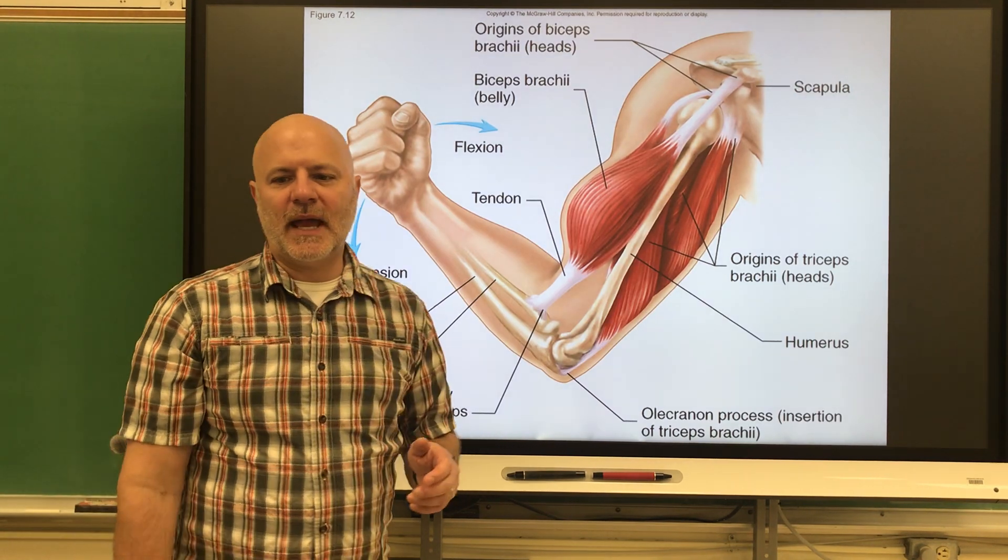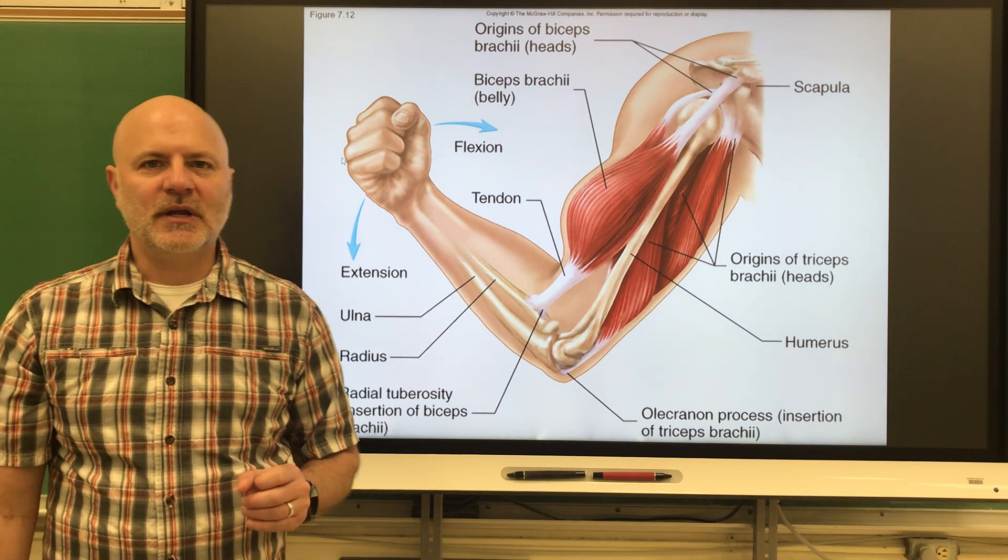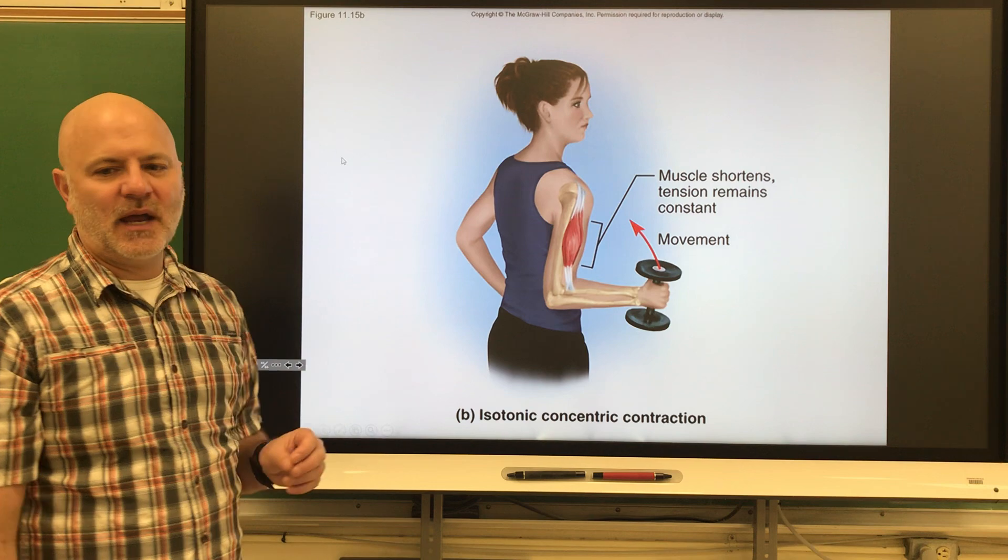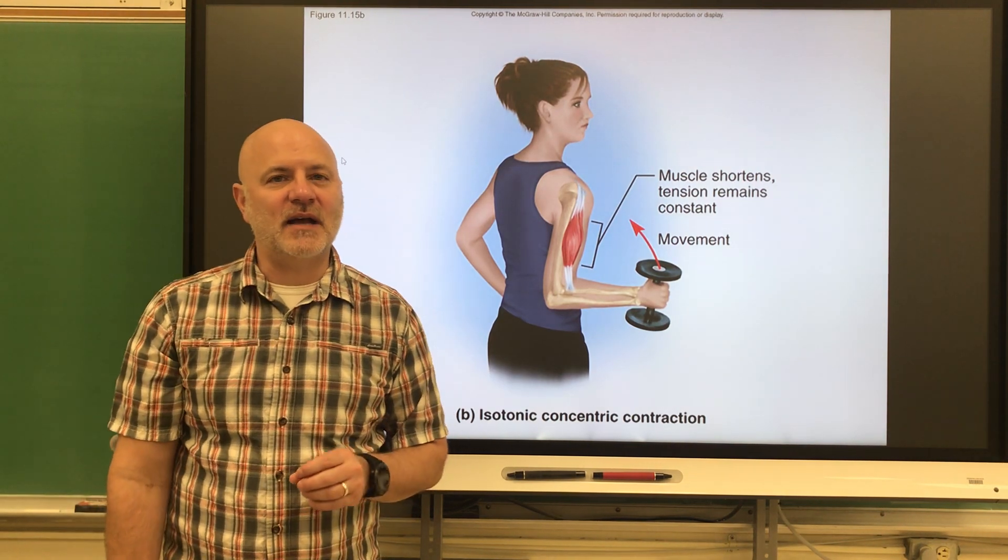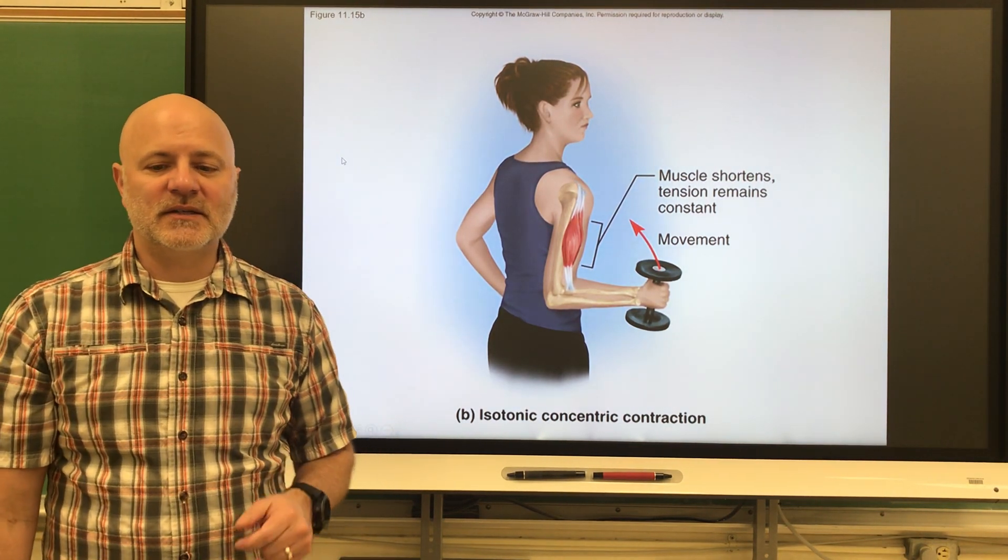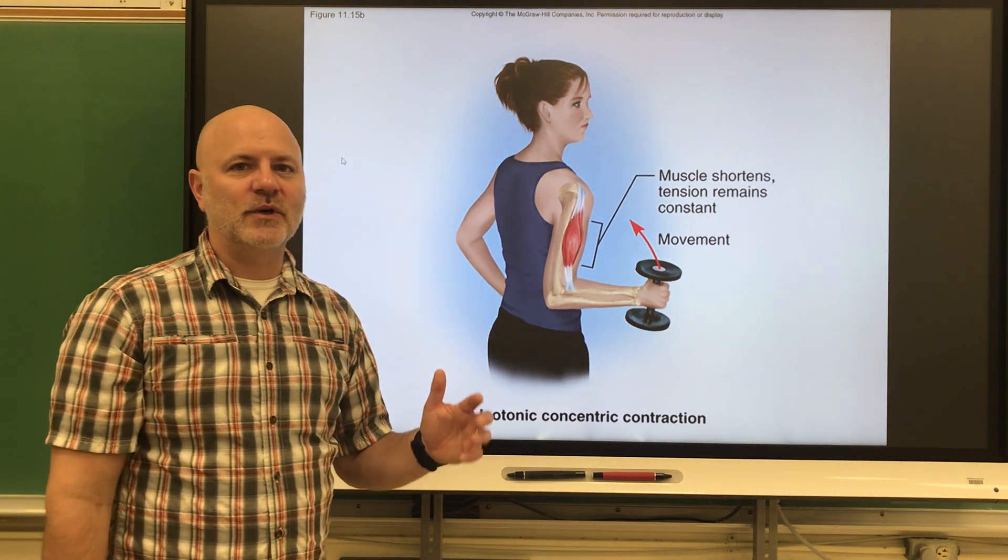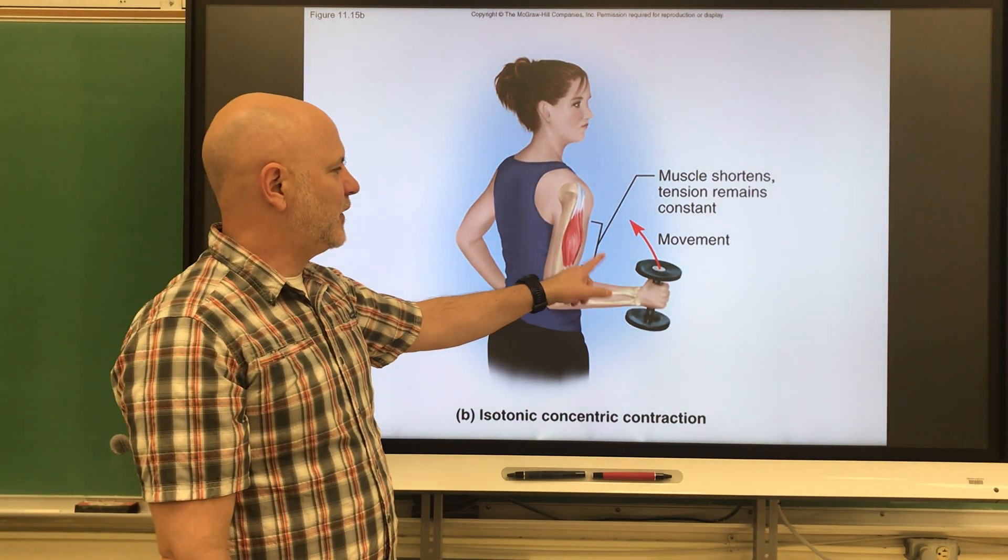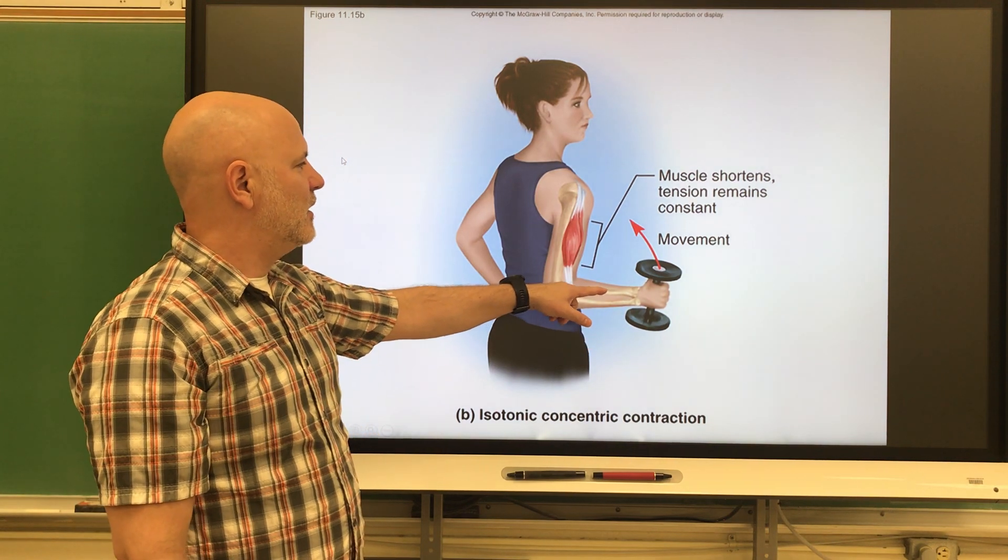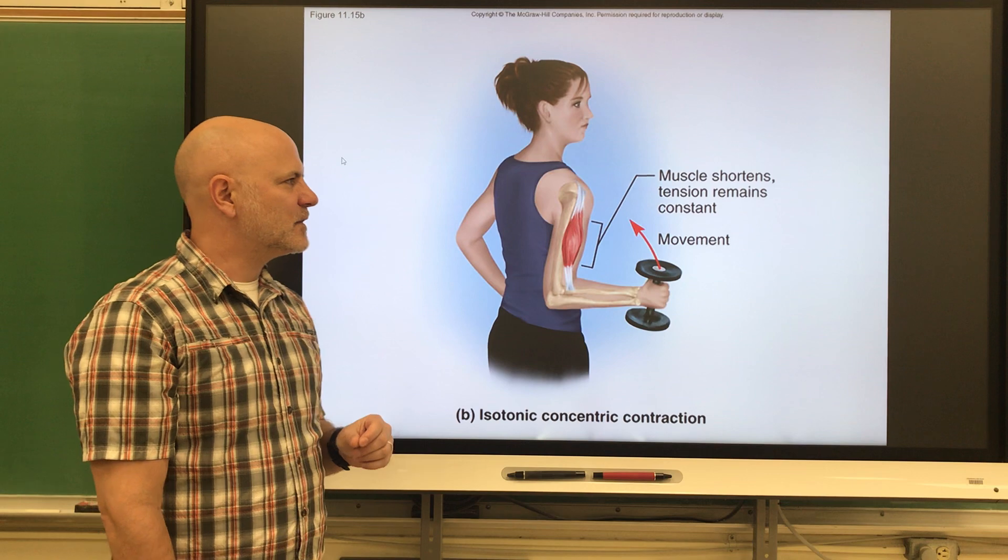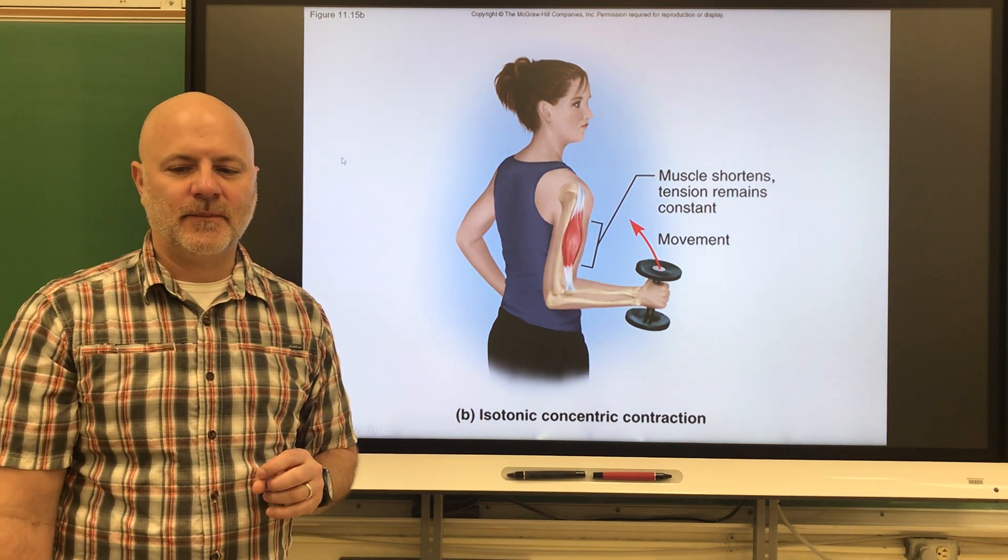Let's look at an isotonic contraction. This is a contraction in which a muscle changes shape. There are two types of isotonic contractions. One is a concentric contraction, a contraction in which the muscle shortens. So in this flexion, she has that barbell, she's bringing it up, the biceps brachii is shortening, undergoing a concentric contraction.